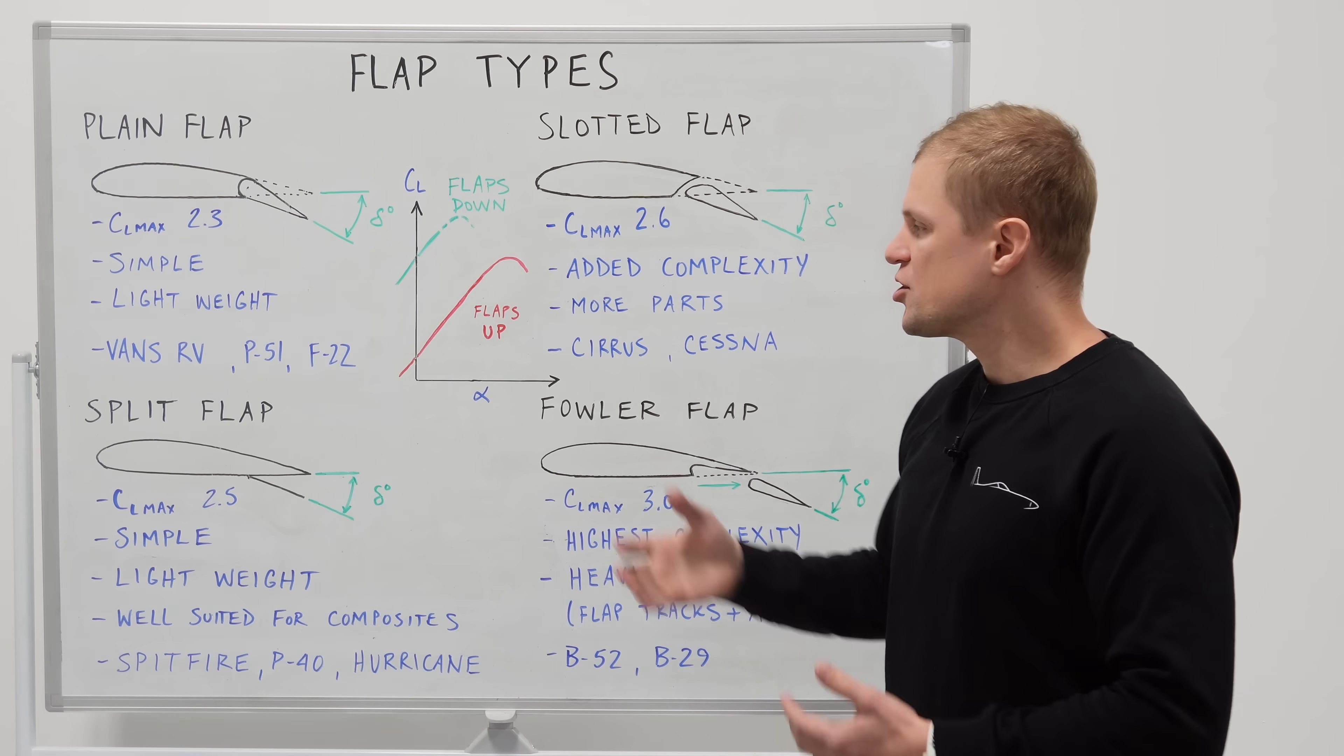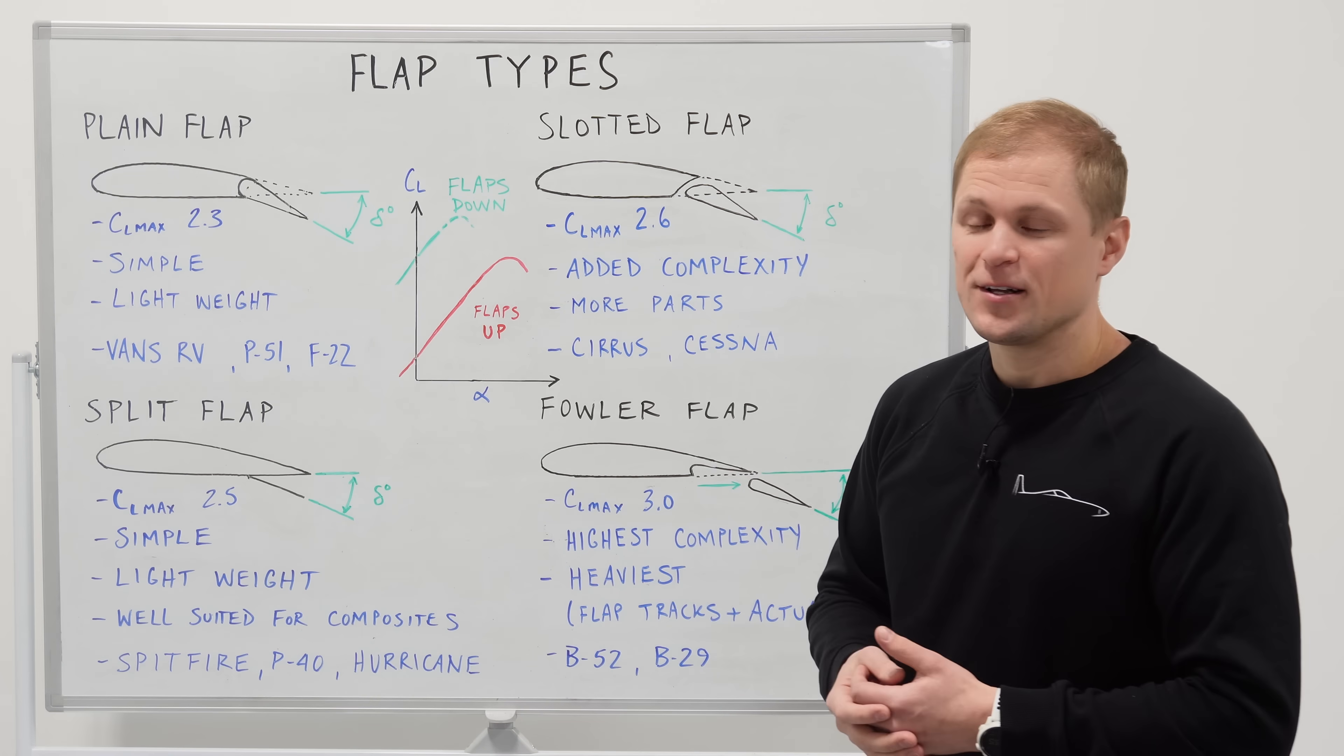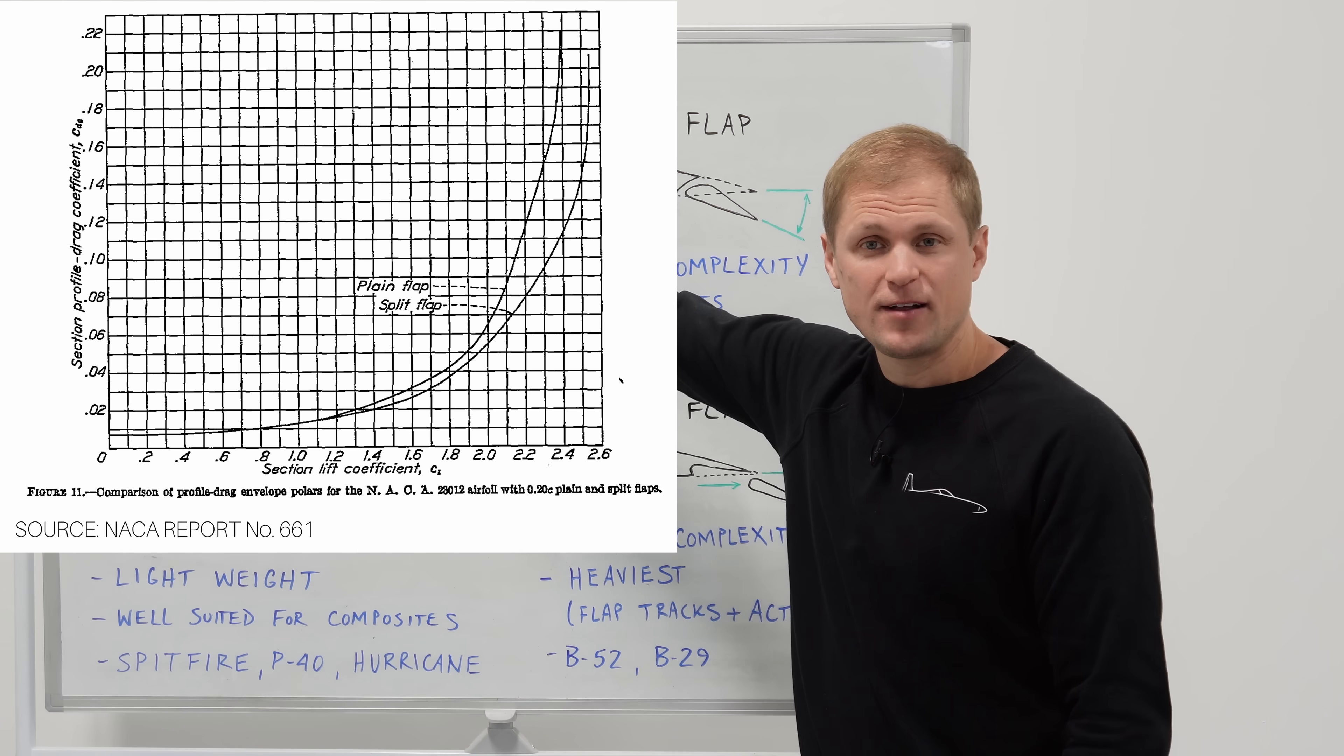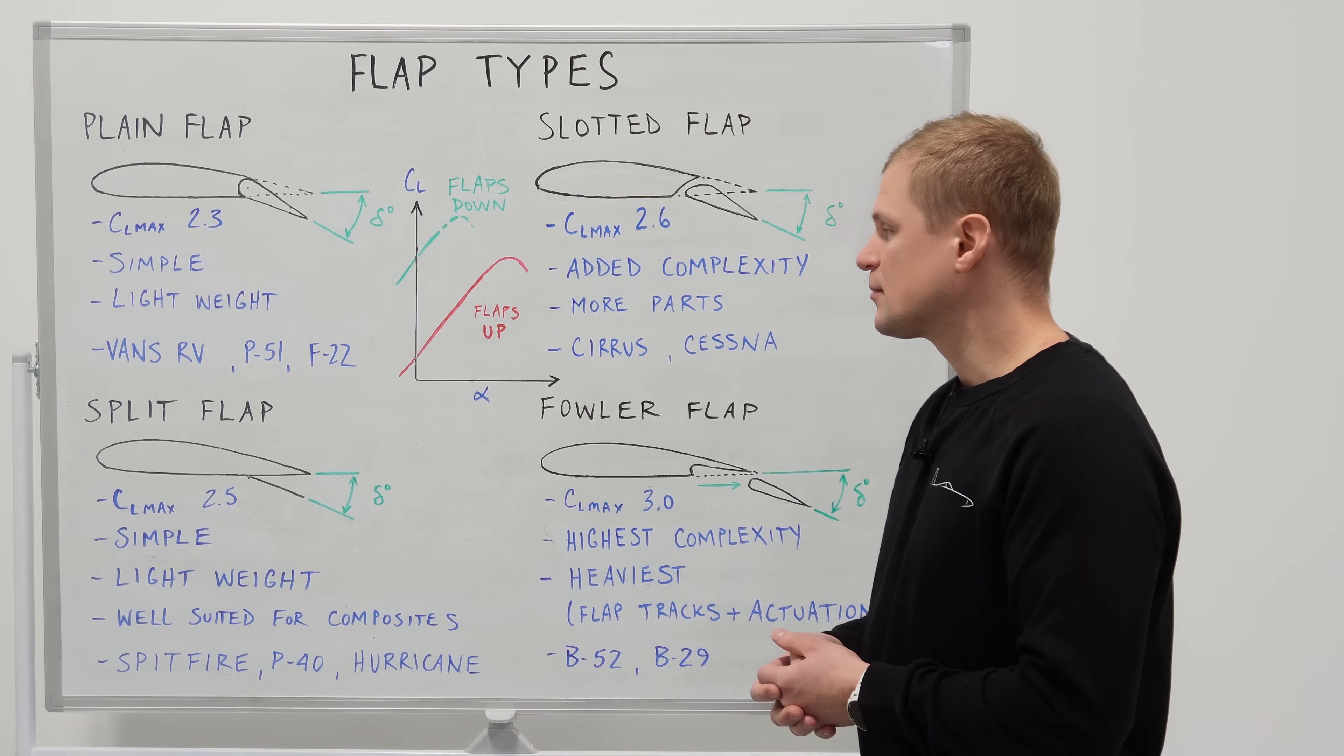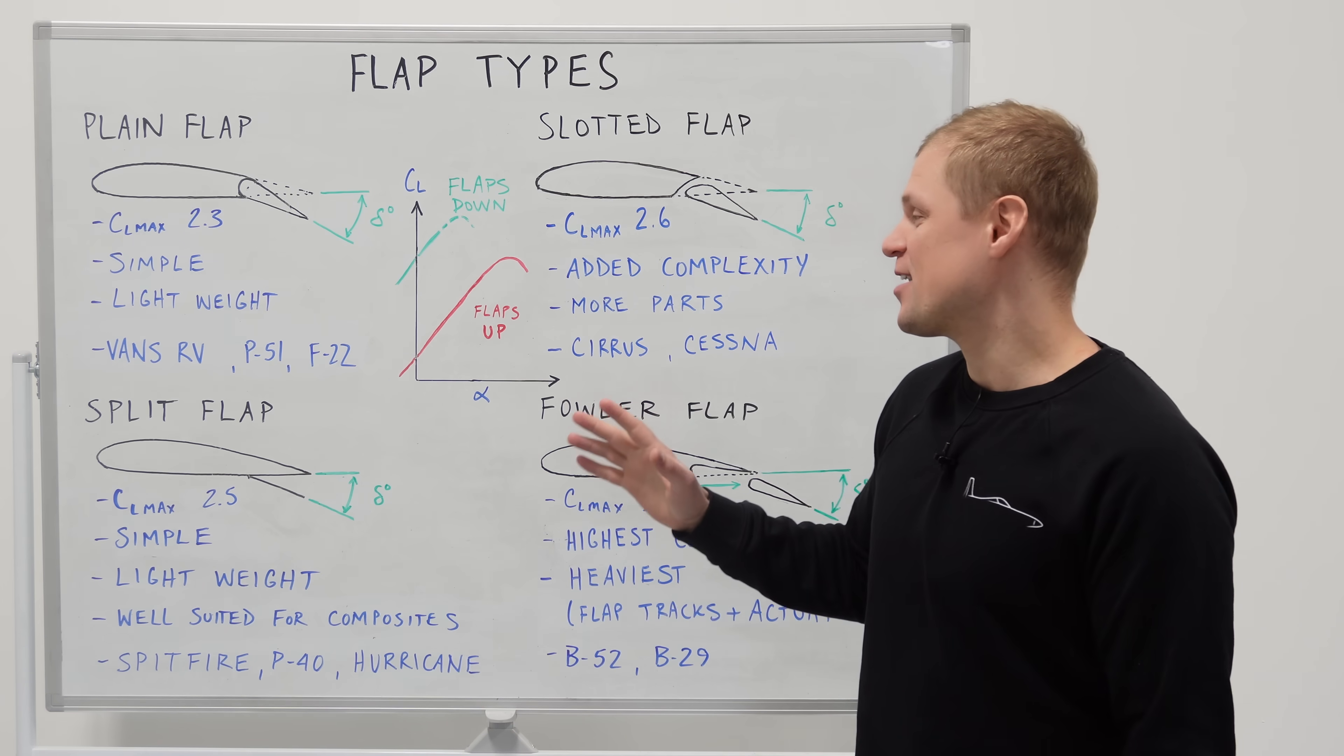But if we measure how much drag we get for a given increment of lift the split flap actually comes out on top of the plain flap. Now you don't have to take my word for it on this. There's actually published publicly available wind tunnel test reports that have compared the split flap versus the plain flap on different airfoils and shows that the split flap comes out on top for lift versus drag. So I'll leave some links to those reports in the description of this video if you want to do some further reading and understand this a little bit deeper. Anyway enough of the rant on the drag.